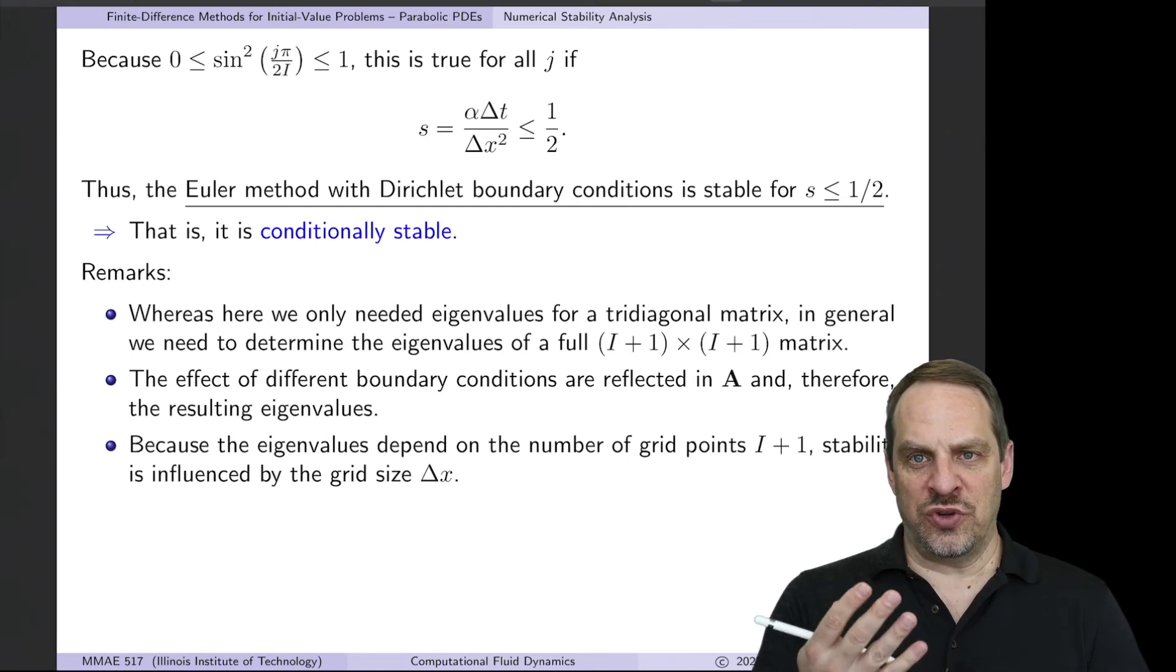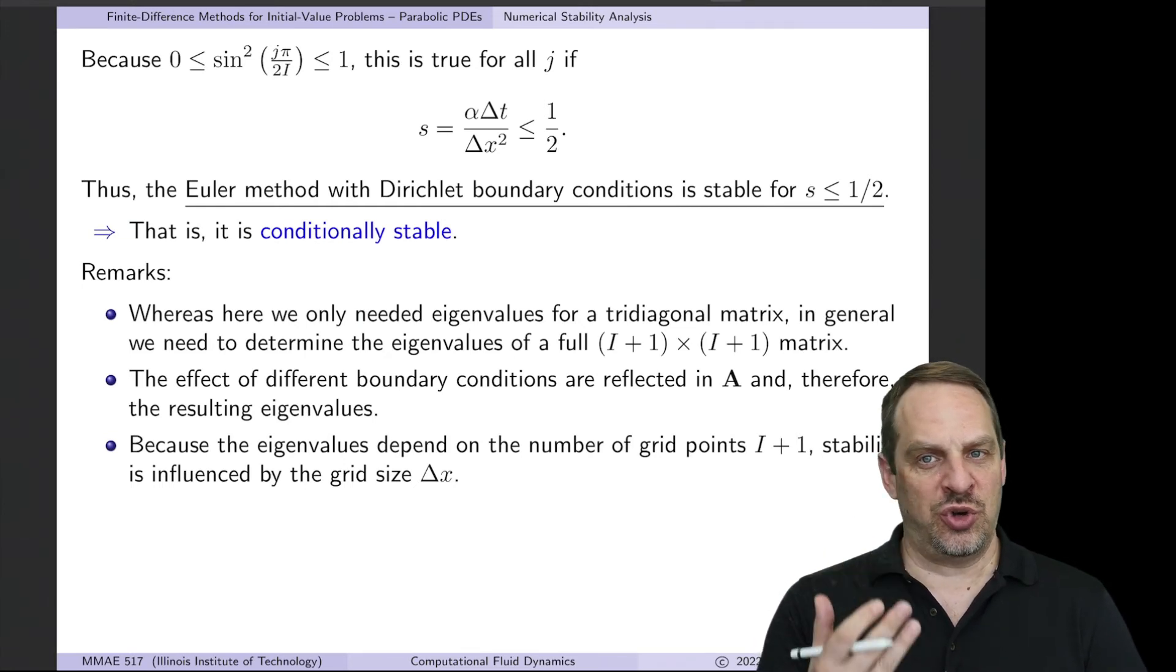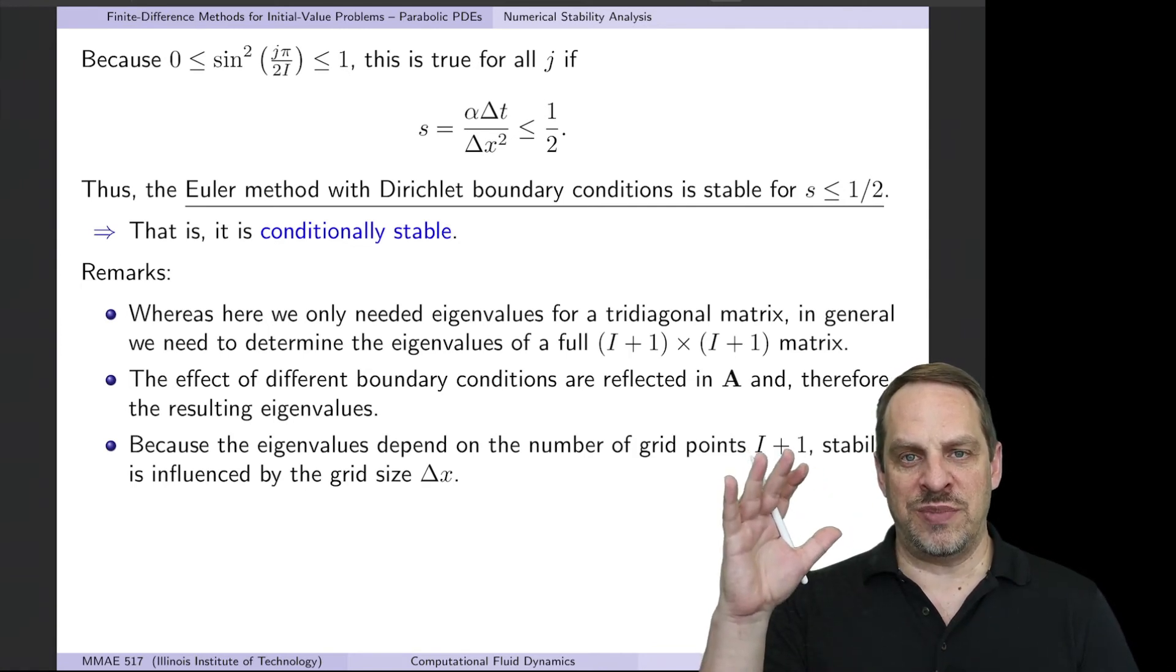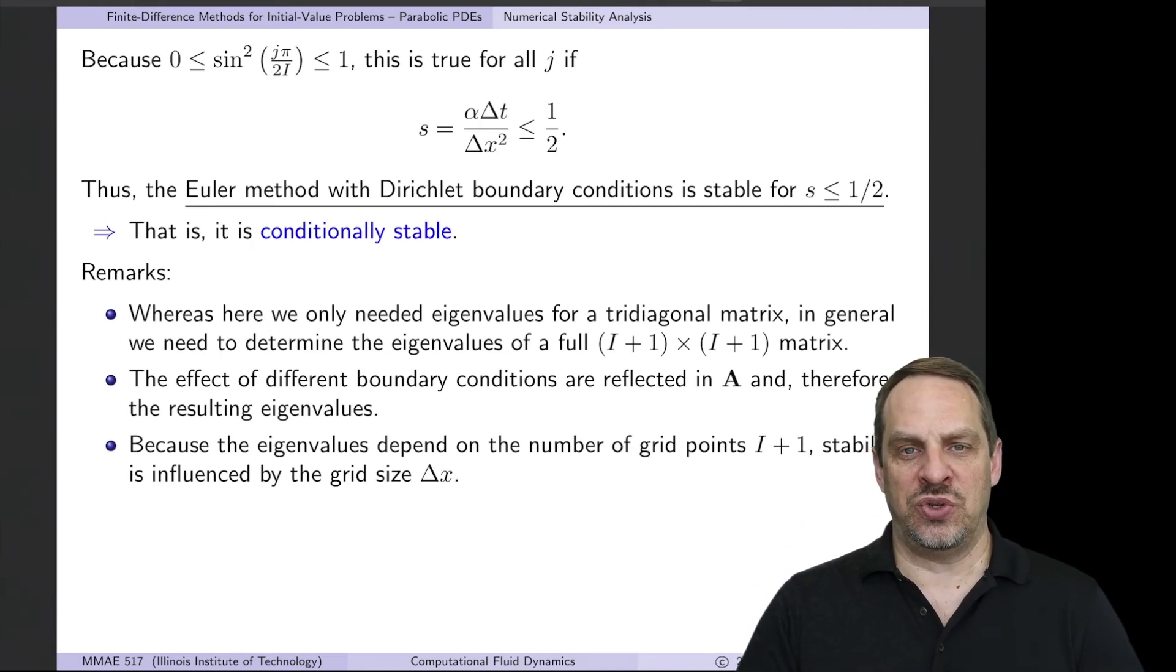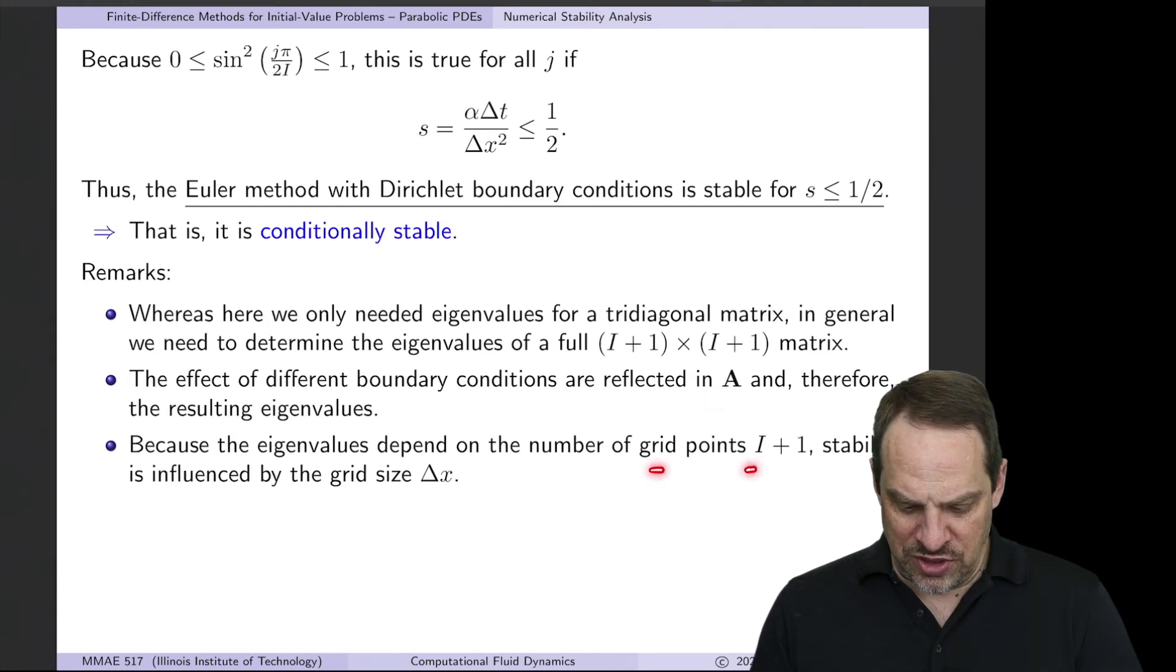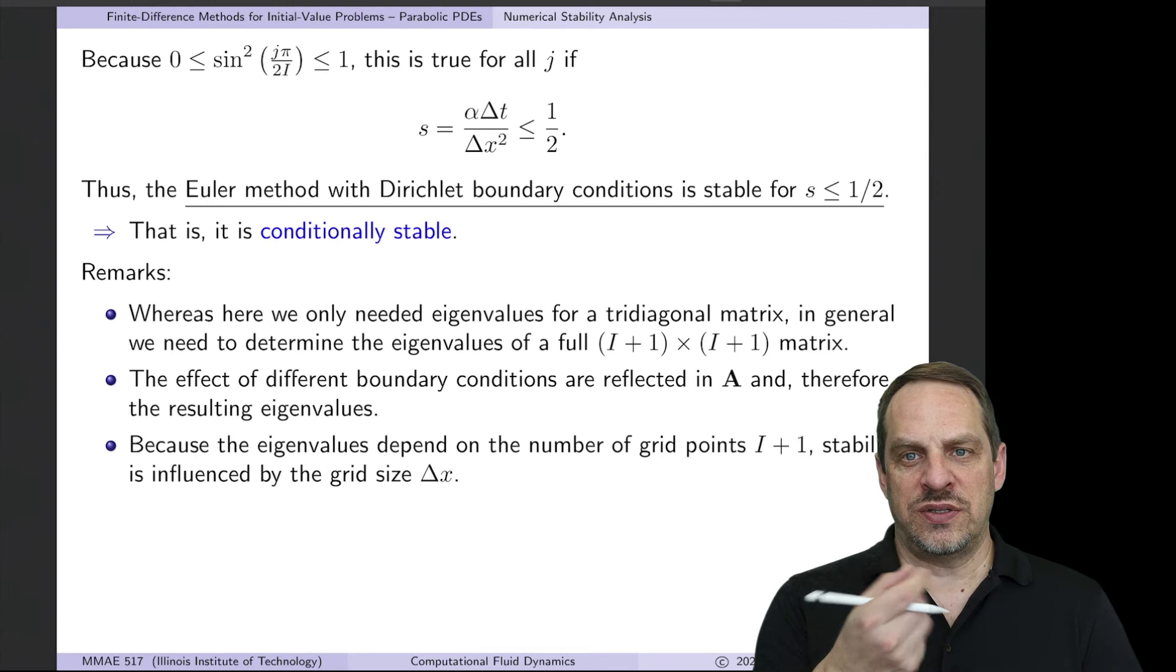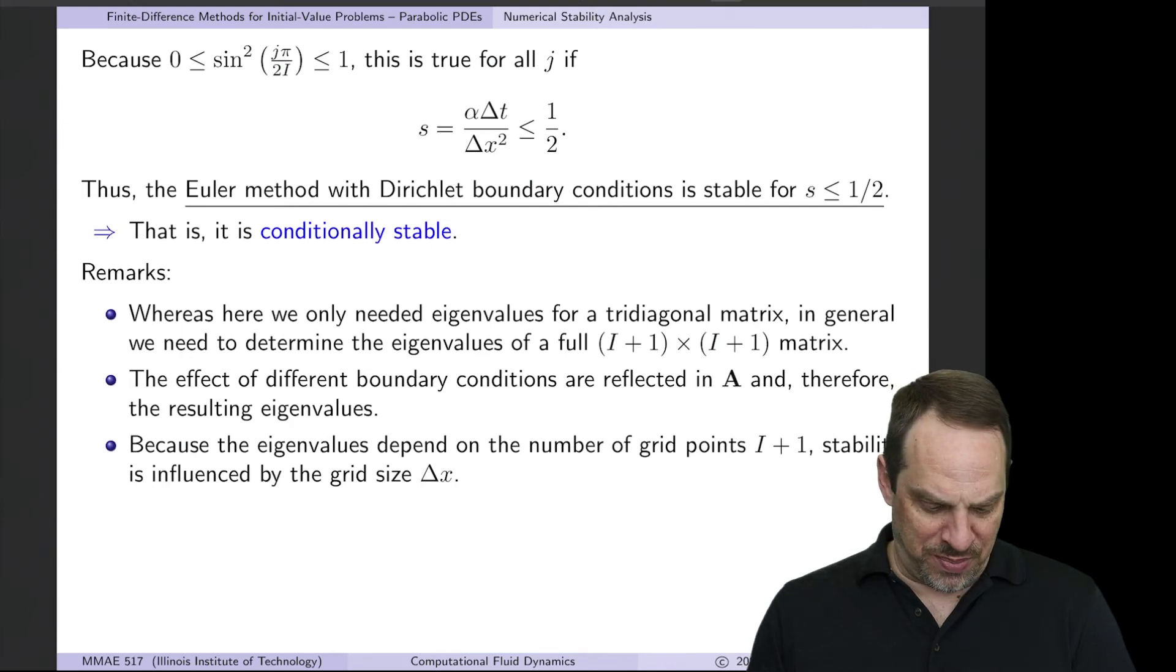Now here this was pretty straightforward because it was a tridiagonal matrix, Toeplitz, and we have exact values of the eigenvalues. That's not normally the case. So normally you're going to have this giant A matrix for which you need to obtain all of the eigenvalues and check that they're all by magnitude less than or equal to 1. So this is a very computationally intensive operation. Now the A matrix does take into account the boundary conditions. Now one other thing you'll notice is that the number of grid points I will affect the eigenvalues. Therefore, the grid size, everything else being the same, the grid size can in general influence the numerical stability properties.